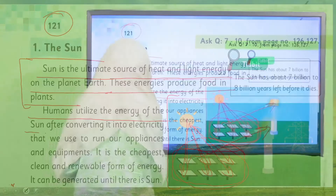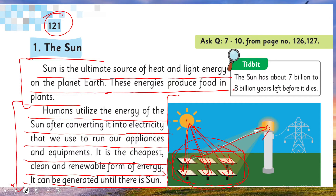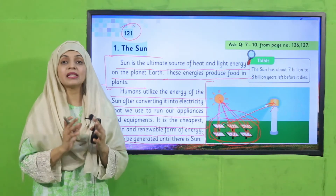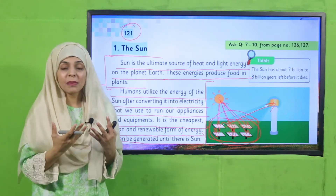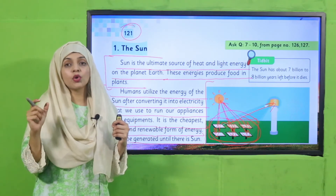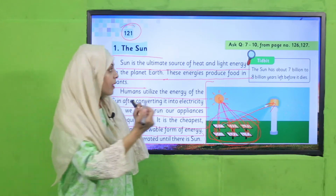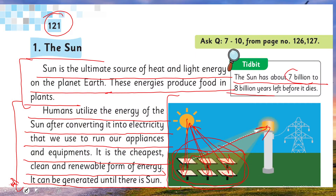Humans utilize the energy of the sun after converting it into electricity, which we use to run our appliances and equipment. It is the cheapest, clean, and renewable form of energy. It can be generated until there is sun. The sun's energy is renewable because as long as the sun is there, we will keep getting this energy. The sun has about 7 billion to 8 billion years left before it dies, so it has a long life and its energy will not finish till 7 to 8 billion years.